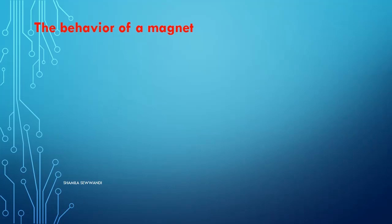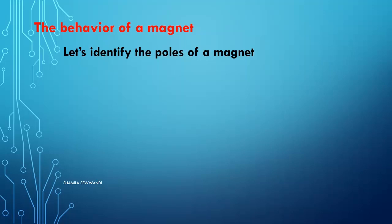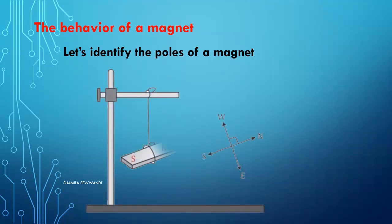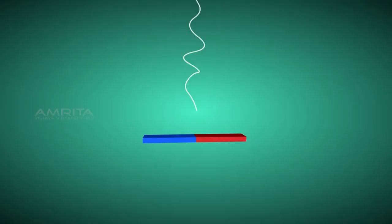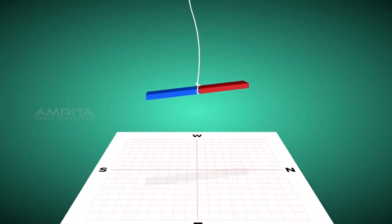The behavior of a magnet — let us identify the poles of a magnet. First of all, use the compass and mark the north and south on the table. Then hang the magnet freely from a string attached to a stand. Let the magnet be still.